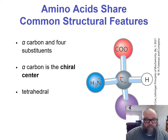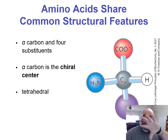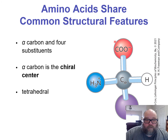The alpha carbon is referred to as the chiral center, because the chiral center is the center atom that other parts of the molecule can rotate around. What's going to be rotating? The carboxyl, the amino, and the hydrogen.